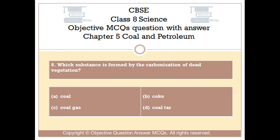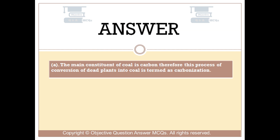The right answer is Option A. The main constituent of coal is carbon. Therefore, this process of conversion of dead plants into coal is termed as carbonization.